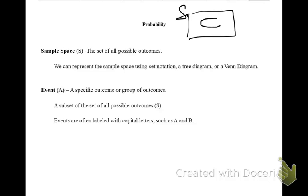We could describe an event in a circle, meaning that all of these items are an event within the sample space. Events are often labeled with letters such as A or B. Another way to represent the sample space would be a tree diagram, which is a series of branches showing possible outcomes.